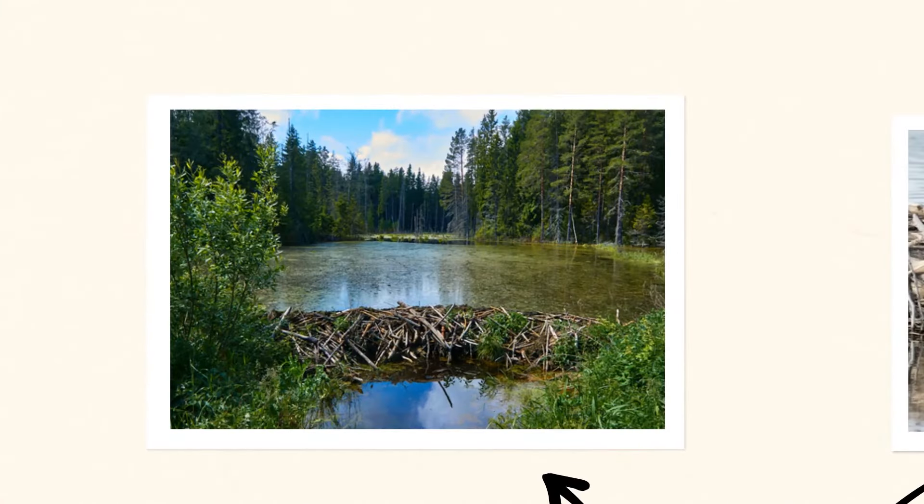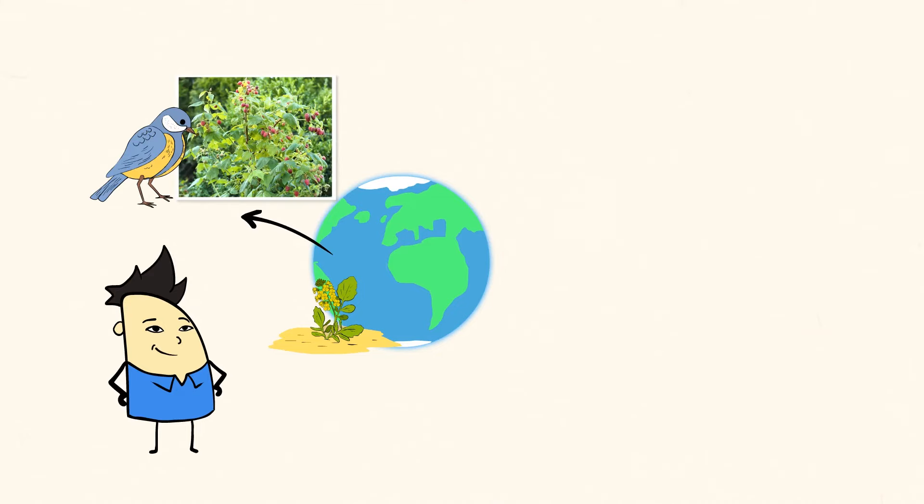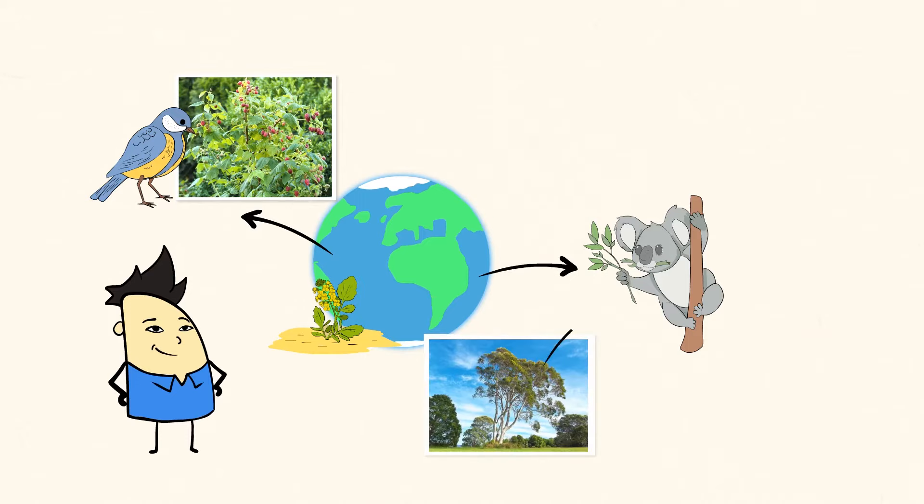Think about how much that new pond has changed the environment. It will be home to tons of plants and animals. Other animals make changes to their surroundings when they eat plants and other animals. Here are a few good examples. Birds eat berries off of bushes.